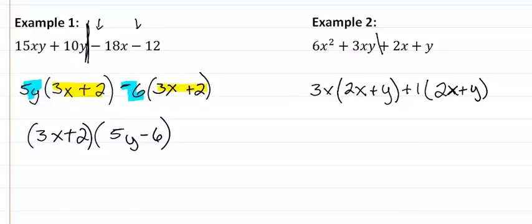Now, notice here that these are the same now, so I'm going to pull out the GCF, which is the two x plus y. Now I'm going to list what's left over, which is the three x plus one. And I have factored it.